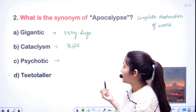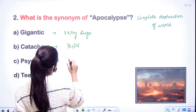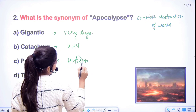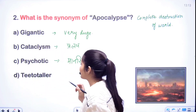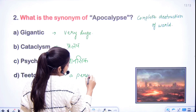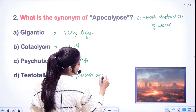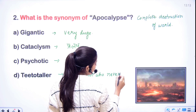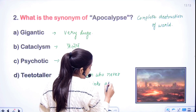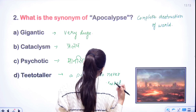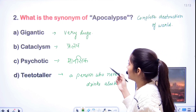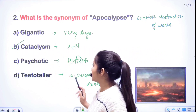Next हमारा 'psychotic' है — psychotic है मानसिक तौर पे कोई भी चीज. Next है हमारा word 'teetotaler'. Teetotaler होता है a person who never drinks alcohol — यानी कि जो शराब ना पीता हो, जिसे शराब पसंद ना हो, वो होता है teetotaler हमारा. So इस word का meaning लग जाएगा — प्रलय यानी cataclysm — इसका perfect meaning हो जाएगा.